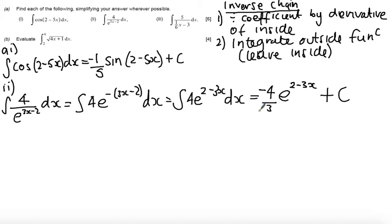Okay, so at this stage, let's do part 3. So I've got the integral of 5 over 16x minus 3 dx. Now this function on the bottom is a bracket to the power of minus 1, so this is going to integrate to log. So 5 is the coefficient. I'm going to divide by the derivative of the inside function, so that's divided by 6.